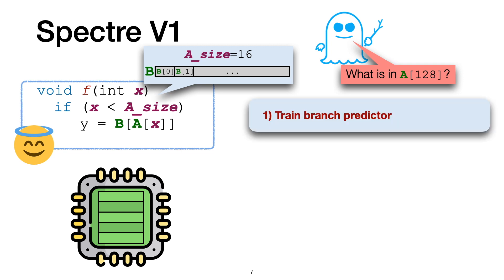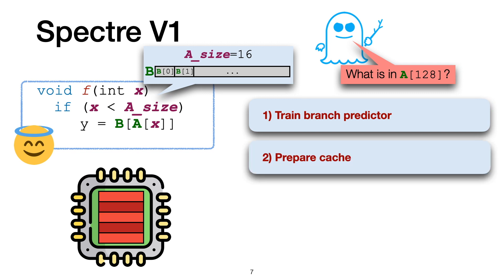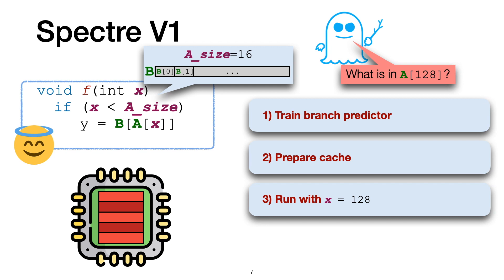The attack works in four phases. First, the attacker trains the branch predictor to ensure that the condition is predicted as satisfied. Next, the attacker fills the cache with attacker-controlled data, depicted here in red. Then, the real attack happens. The attacker tricks the honest process into executing the function f with 128 as input. Since we trained the predictor beforehand, the CPU executes the memory accesses, which leave a footprint in the cache.